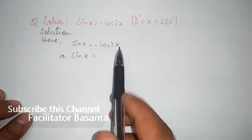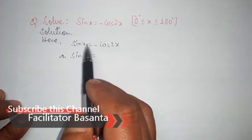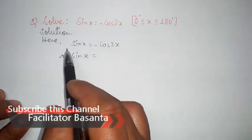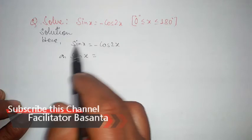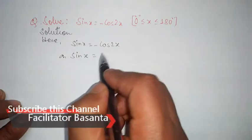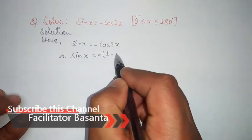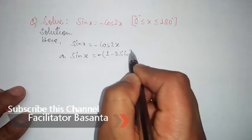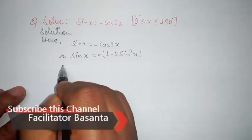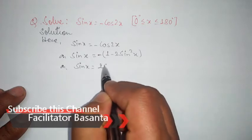It will be easy if you change cos 2x in terms of sin rather than changing sin in terms of cos, which would give you under root 1 minus cos square and require squaring both sides. For easiness, we change cos 2x in terms of sin, which gives us 1 minus 2 sin square x. So sin x equals negative times 1 minus 2 sin square x, or sin x equals 2 sin square x minus 1.